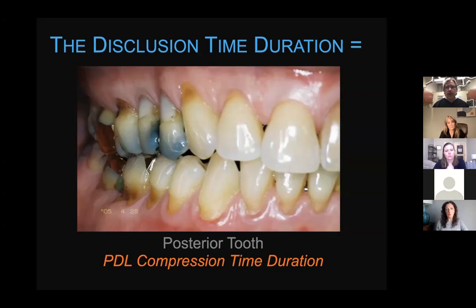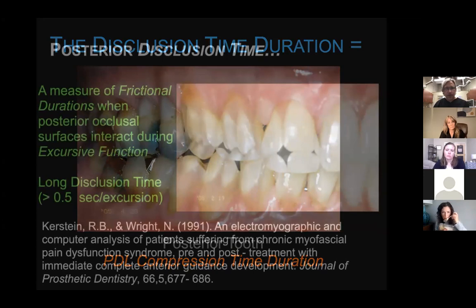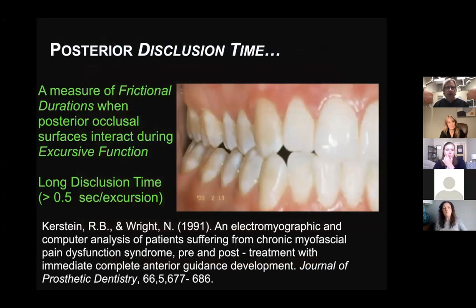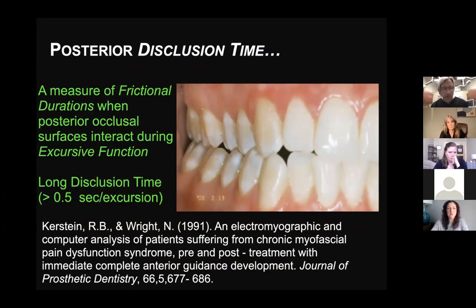Disclusion time duration is basically how long the back teeth hit when you grind left and right. Some people are locked in, some have open bites, so it's really specific to each patient. It's a measurement of the duration that posterior occlusal surfaces interact during parafunctional excursive function.